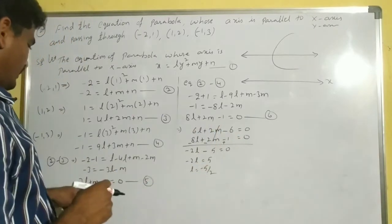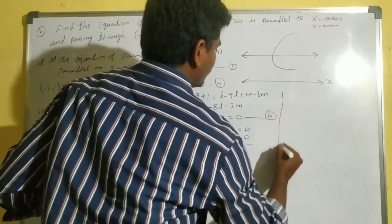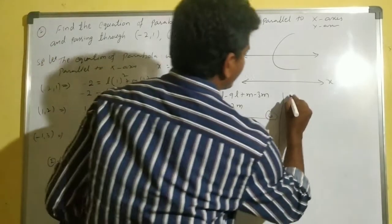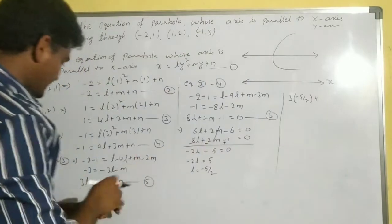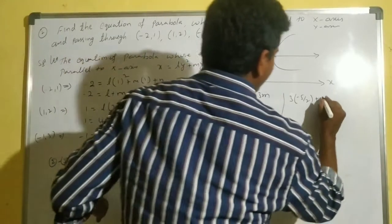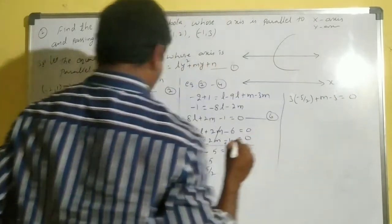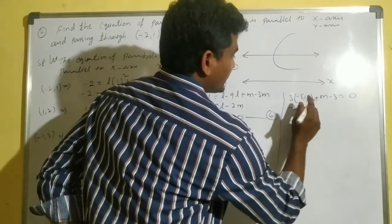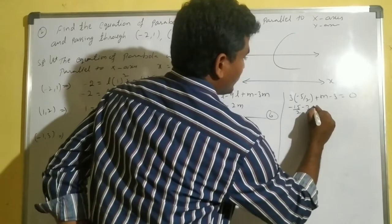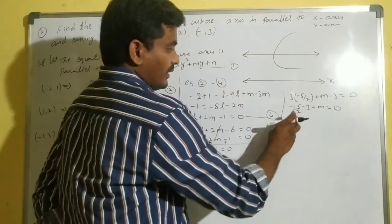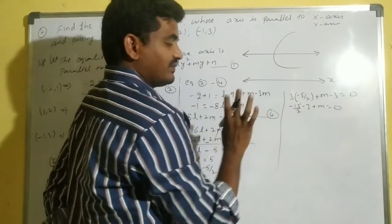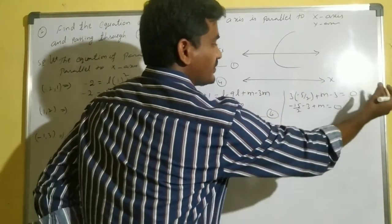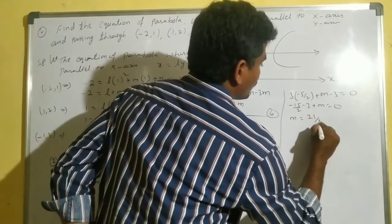Substitute l = -5/2 into equation number 5: 3(-5/2) + m - 3 = 0, giving -15/2 + m - 3 = 0. Converting -3 to halves: -15/2 - 6/2 = -21/2. So m = 21/2.